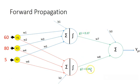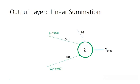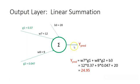Now we have g1 and g2 and we move to the output layer. We compute a linear combination: y_pred = w7×g1 + w8×g2 + b3. Using w7=12, w8=9, and b3=20, we get a predicted value of 24.95.